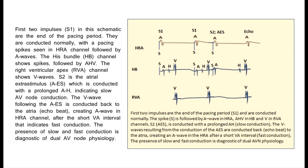In this schematic, the first two impulses (S1) are the end of the pacing period, conducted normally with pacing spikes seen in the HRA channel followed by A-waves. The HIS bundle (HB) channel shows spikes followed by AHV. The RVA channel shows V-waves. S2 is the atrial extra-stimulus (AES), conducted with a prolonged AH indicating slow AV node conduction. The V-wave following the AES is conducted back to the atria as an echo beat, creating an A-wave in the HRA channel after a short VA interval, indicating fast conduction.